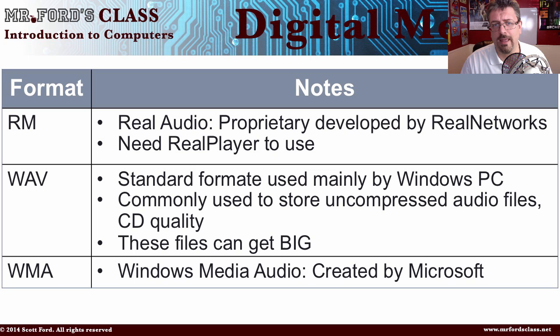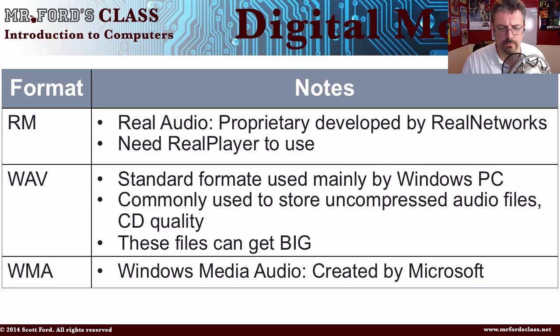For example, if you rip a song — ripping is taking a song off a CD and putting it on your computer — a three-minute song as an MP3 file will be relatively small, while a WAV file is just absolutely ginormous. Finally, WMA — Windows Media Audio — was created by Microsoft.